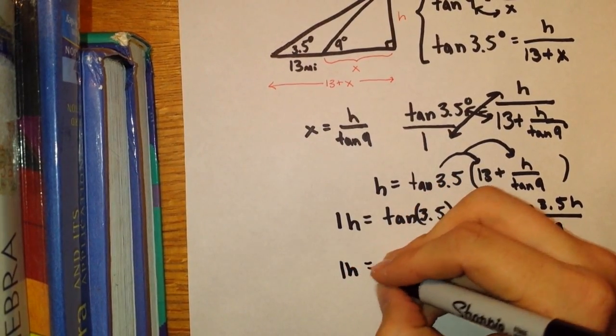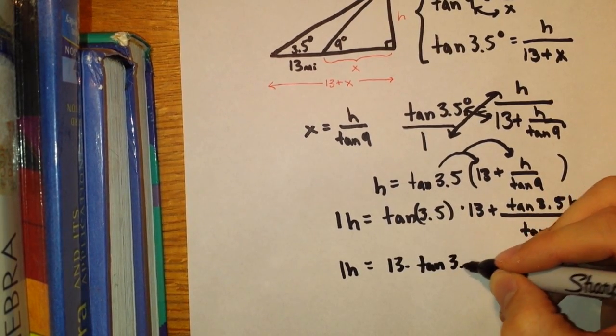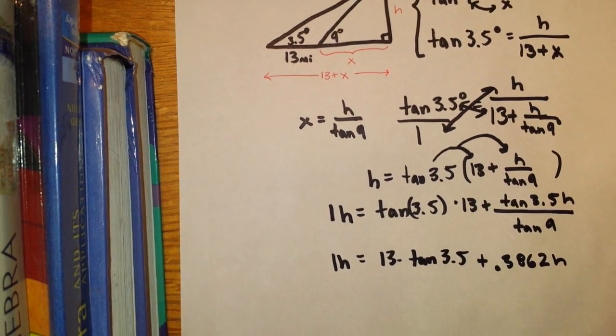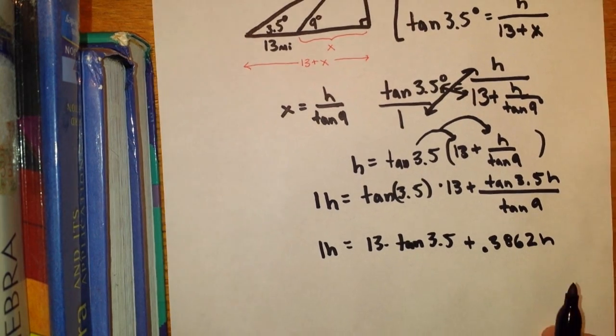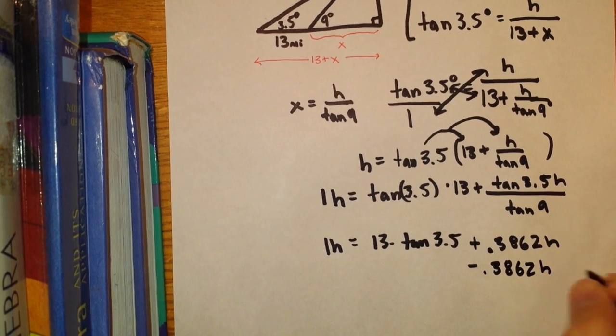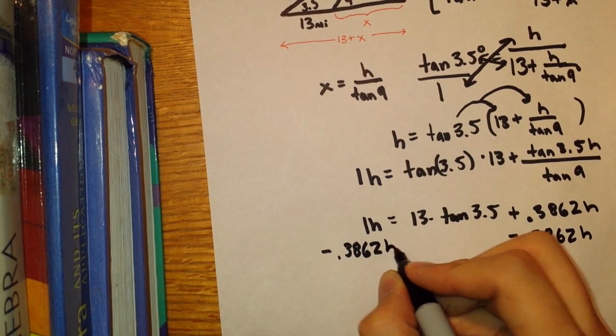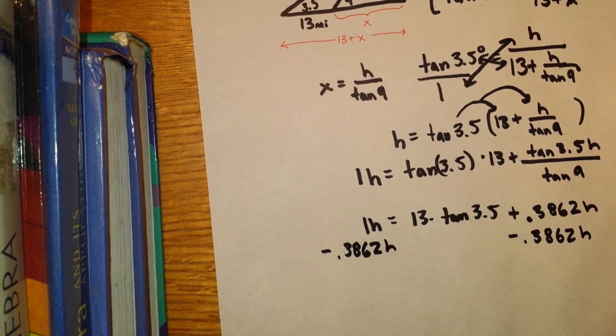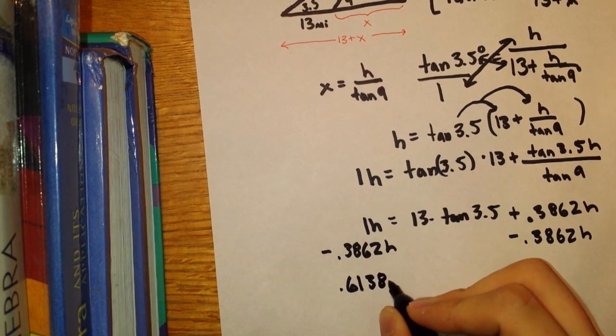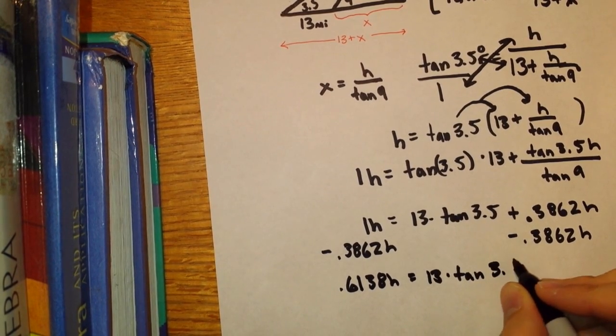So we have 1h equals 13 times tangent 3.5 plus 0.3862h. From this point, it's a two-step linear equation to solve. Subtract 0.3862 from both sides. When you do that, you get 0.6138h equals 13 times tangent of 3.5.